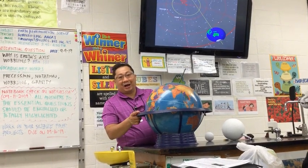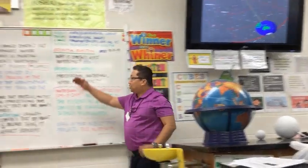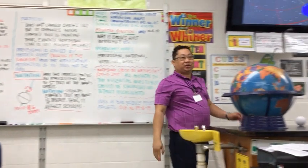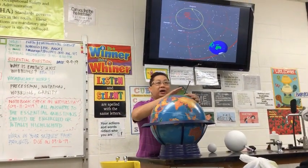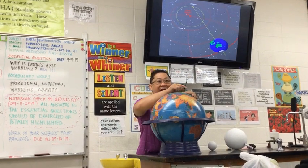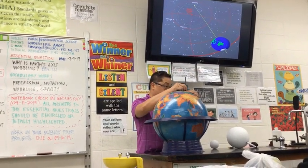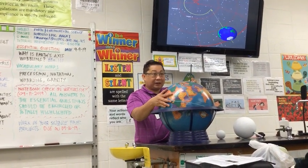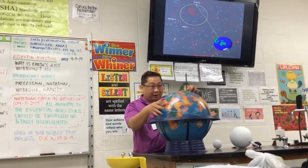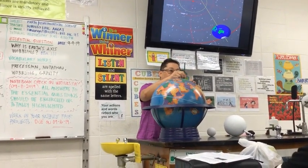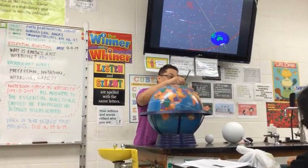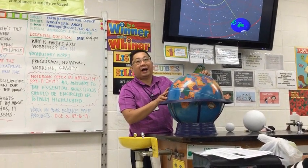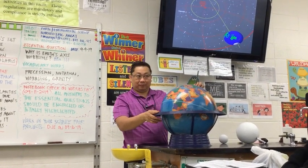Good morning again. Now we'll be discussing nutation. Precession and nutation come together. Nutation is the irregularity in the precession. Precession is not smooth and circular — precession wiggles. There are back-and-forth movements of the axis as it makes a rotation. Those back-and-forth movements or oscillations are what we call nutation.